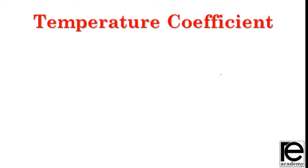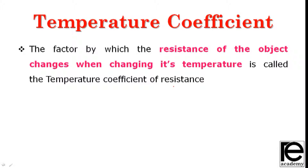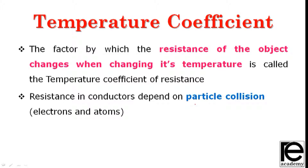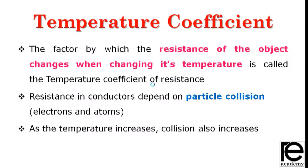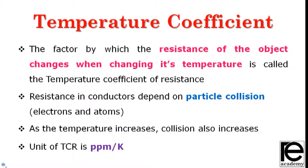The temperature coefficient: the factor by which the resistance of an object changes when its temperature changes is called the temperature coefficient of resistance. In a conductor, resistance arises due to particle collisions between atoms and electrons. As temperature changes, the resistance changes. TCR is expressed in units of ppm per Kelvin — that is, parts per million per Kelvin.